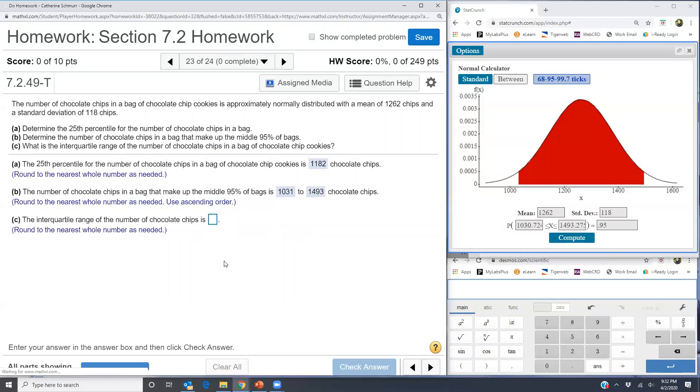Now part C is the part that seems to give students the most trouble. It asks for the interquartile range of the number of chocolate chips. So if you remember, this was something we covered in unit one. And we call the interquartile range the IQR, and that's equal to Q3 minus Q1. So the range of the middle 50% of your data.